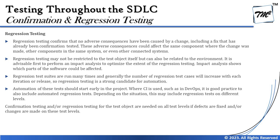Impact analysis shows which parts of the software could be affected and helps reduce effort on regression testing. Regression test suites are run many times, and generally the number of regression test cases increases with each iteration or release. Regression testing is a strong candidate for automation, and automation should start early in the project. Where continuous integration (CI) is used, such as in DevOps, it is good practice to include automated regression tests in the pipeline.